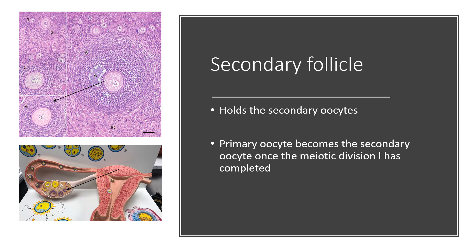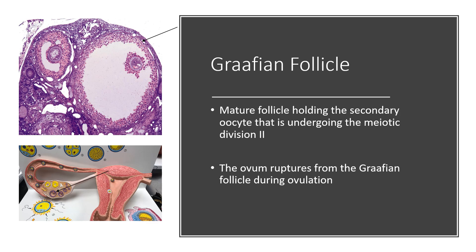It becomes a secondary oocyte once the first phase of meiotic division has completed, and the secondary oocyte is surrounded by the secondary follicle. The Graafian follicle is the most important and most mature follicle, and it's still holding a secondary oocyte. This is when the secondary oocyte has finished undergoing the second phase of meiotic division, and the egg actually ruptures from the Graafian follicle during ovulation.